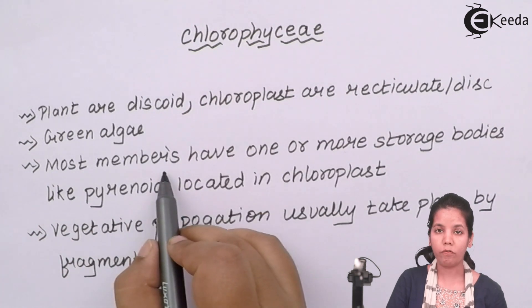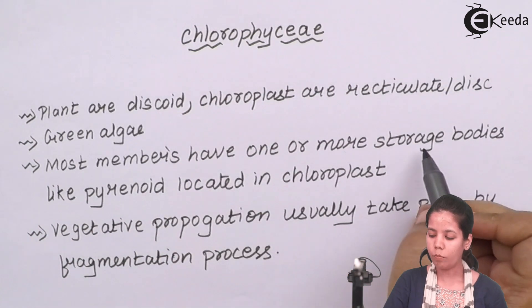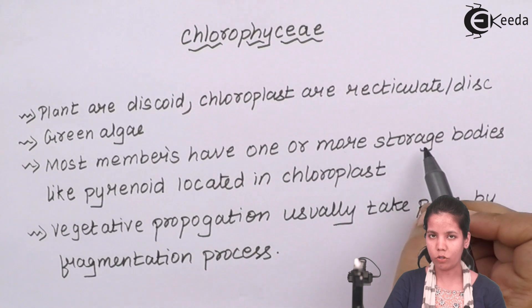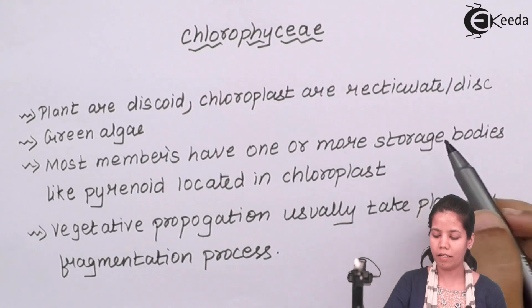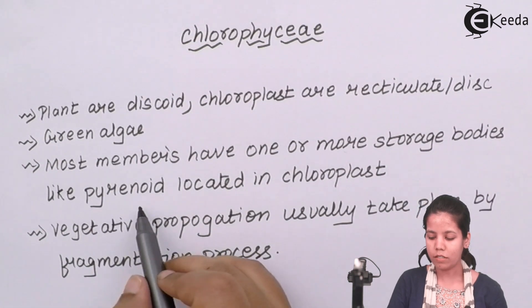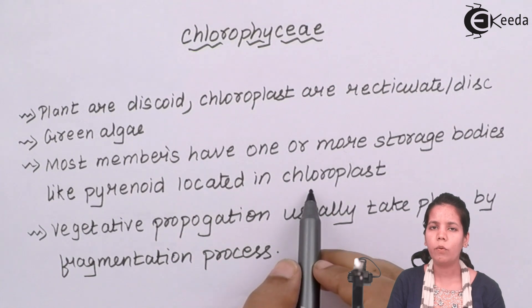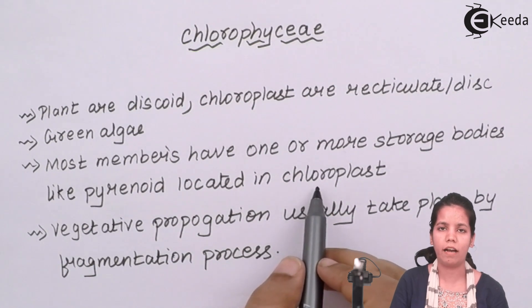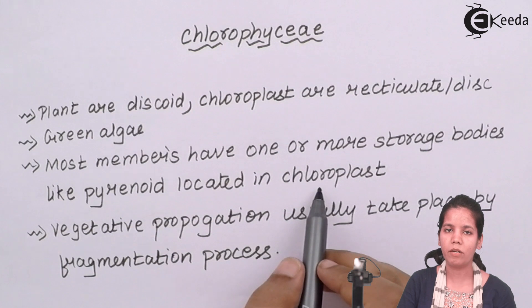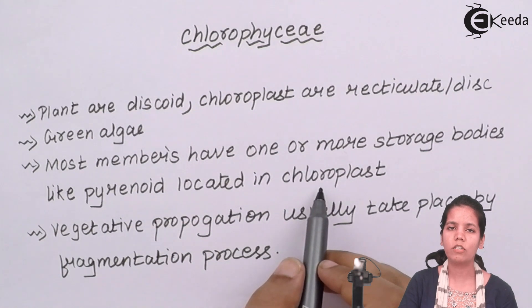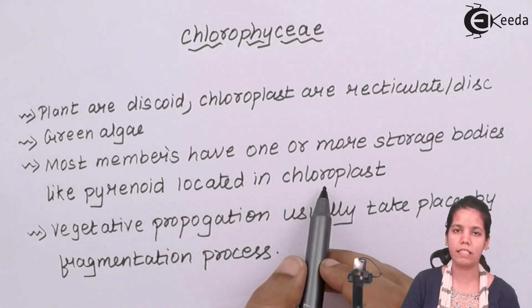Most members of this family have one or more storage bodies, and these storage bodies are nothing but pyrenoids located inside chloroplasts. When you have studied the structure of chloroplasts, we know there is something called a thylakoid and grana. These pyrenoids are located just beside the grana structure.